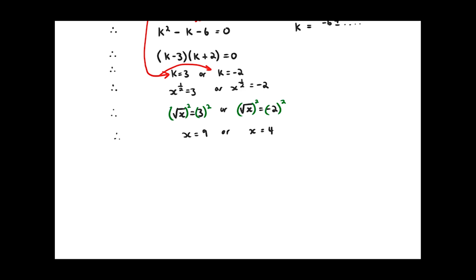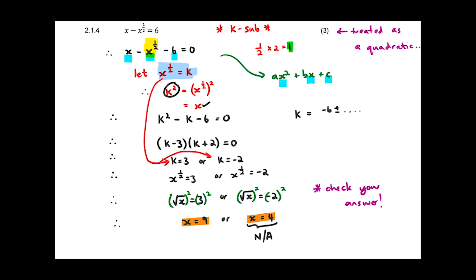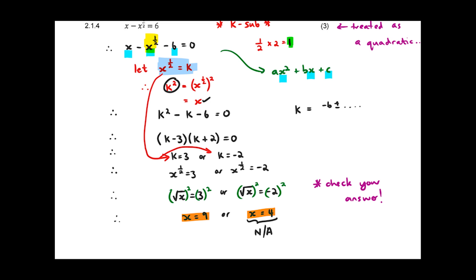Going back to a previous example where we had a square root and had to check our answers — whenever you have rational exponents, do yourself a favor and check your answers at the end. Often you'll end up with an answer that's invalid. Substituting x equals 9 into the equation gives 6, which works. But substituting x equals 4, the left-hand side will not equal the right-hand side, so x equals 4 is not applicable.